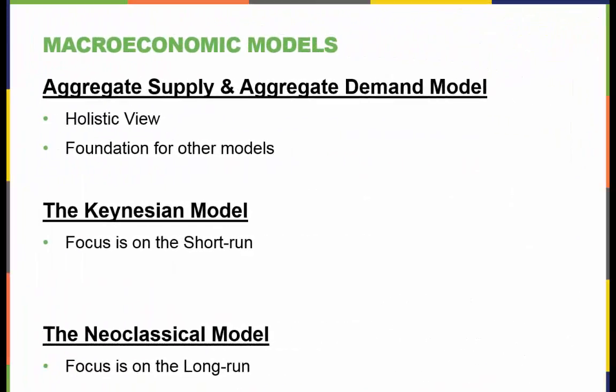Here are the three economic models we will touch on in this chapter. Our main focus will be on the aggregate supply-aggregate demand model. It provides us with a holistic view of macroeconomics and is the foundation upon which the other models are built. The Keynesian model, developed by John Maynard Keynes, focuses on the short-run effects of shifts in aggregate supply and aggregate demand on the economy.